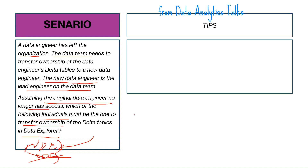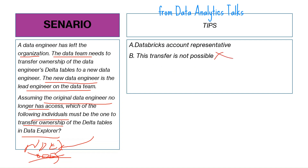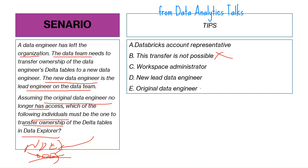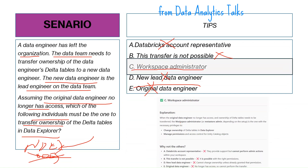Looking at the options: the Databricks account representative cannot do a transfer; a transfer is not possible is incorrect; the original data engineer has already left, so that is out of scope; and the new lead data engineer does not have permission to transfer ownership. The correct answer is the workspace administrator, who has the capability to change ownership of delta tables in Data Explorer and manage permissions and access control for Unity Catalog objects.